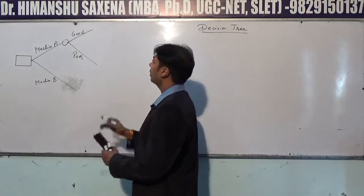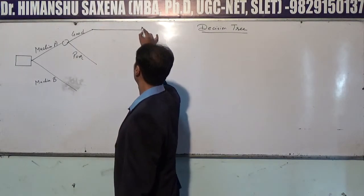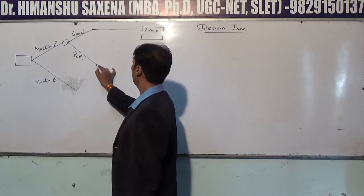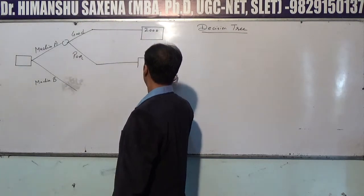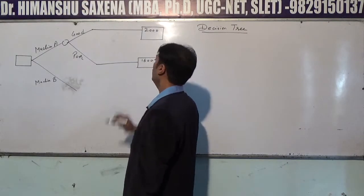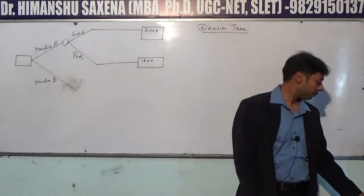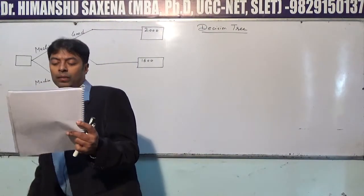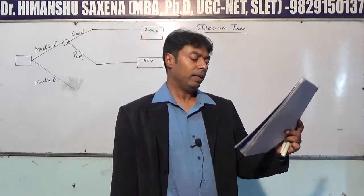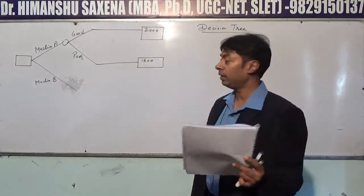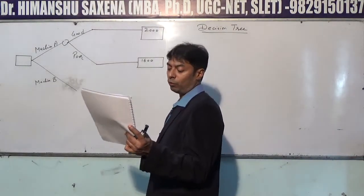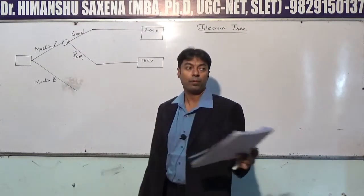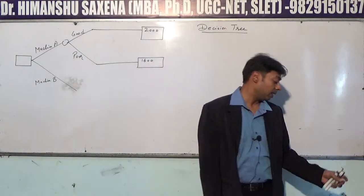For Machine A: good quality raw material gives a profit of Rs. 2,000, and poor quality gives Rs. 1,600. If Machine B is used and the raw material is of good quality, the profit will be Rs. 2,400. But if the materials are poor, the profit will be Rs. 800.